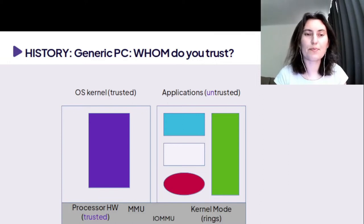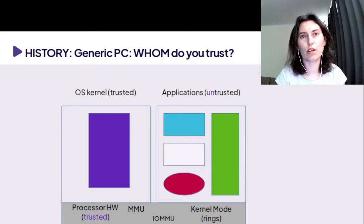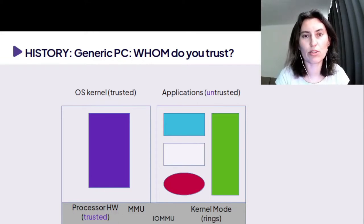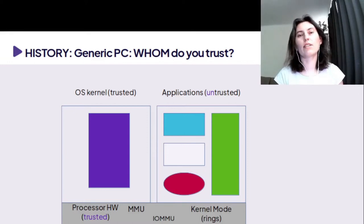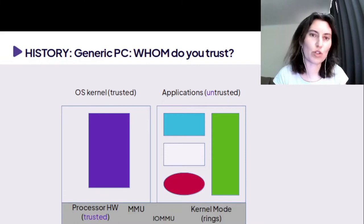In this case, we usually trust the operating system kernel because it implements a big part of the protection between the applications. It's assisted by the hardware but really implementing a big part of the protection. Then the applications are generally untrusted — they can be running and trying to bypass the security measures we have set.